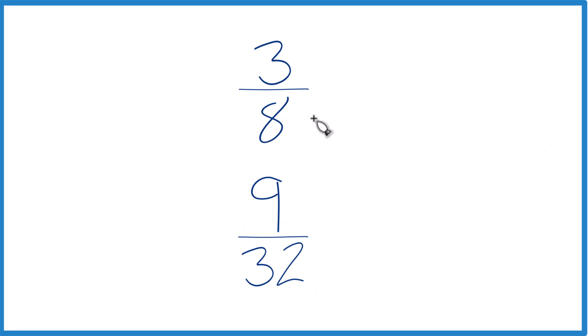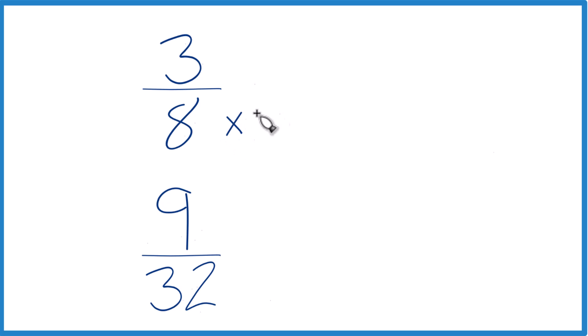We could multiply 8 times 4. That actually equals 32. So that would be our denominator up here. Down here we already have 32, so let's just keep it the same: 9/32.